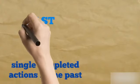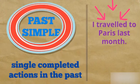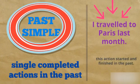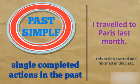As you know, the past simple is about a single completed action in the past. In the example it says: I traveled to Paris last month. This action started and finished in the past.